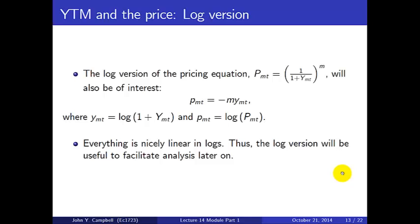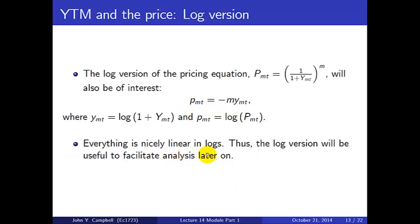We can also express this in logs, which is what academics like to do because the equations look much simpler. Taking logs of the price-yield equation, where little p is the log of big P and little y is the log of (1+Y), we get: little p equals minus maturity M times little y. The relation between prices and yields is nicely linear in logs, making later analysis much easier. Academics tend to use this form; practitioners don't.